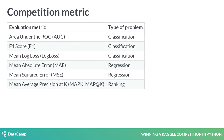Each competition specifies a single metric that is used to rank the participants. The better metric value our model achieves, the better position we obtain. So, our goal in the competition is to build a model that optimizes the given metric.